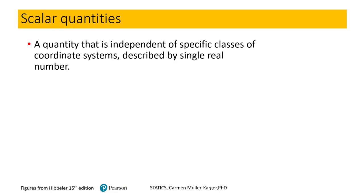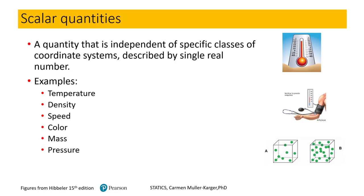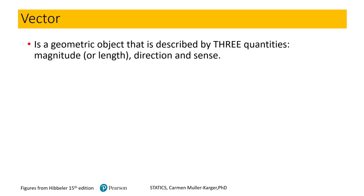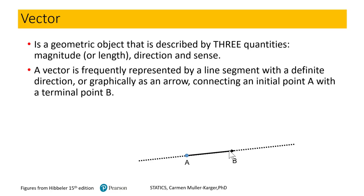It's also very important to review the difference between a scalar quantity and a vector quantity. Examples of scalars are temperature, density, speed, color, mass, and pressure. A vector is a geometric object described with three quantities: magnitude or length, direction, and sense. For example, sense could be whether you push or pull to open or close a door — that is the sense of the vector.